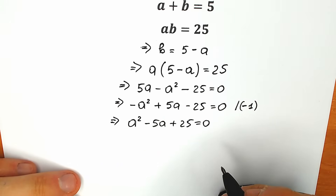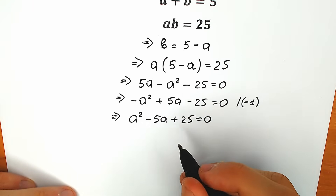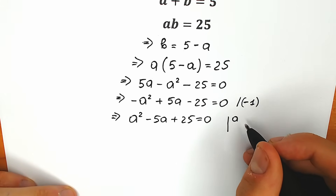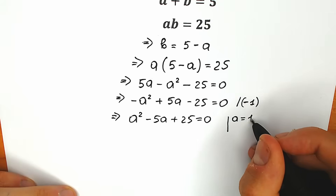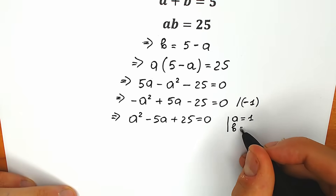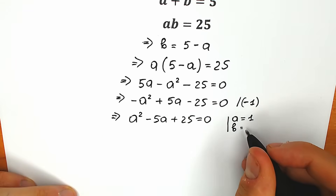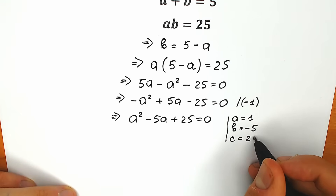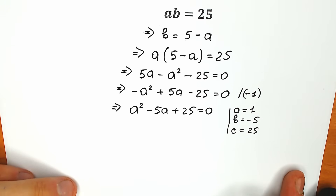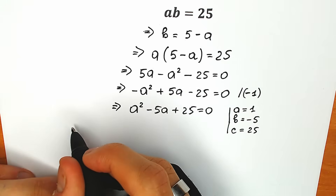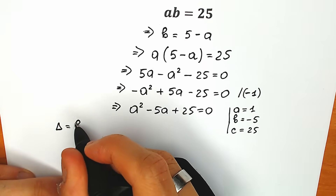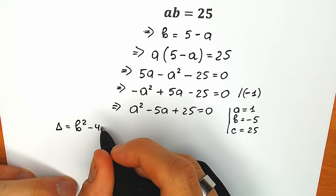Right now let's solve this quadratic equation. I choose the basic method of coefficients, because there are a lot of students watching my video right now. So we have a equal to 1, b coefficient equal to minus 5, and the third coefficient c equal to 25. Let's find the discriminant, so let's go on the left side. Discriminant equals b squared minus 4ac.